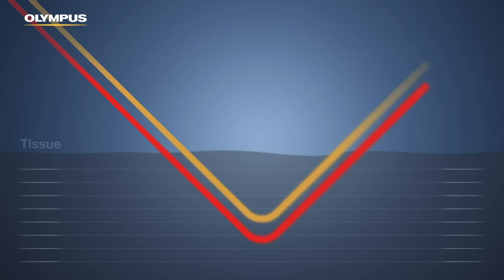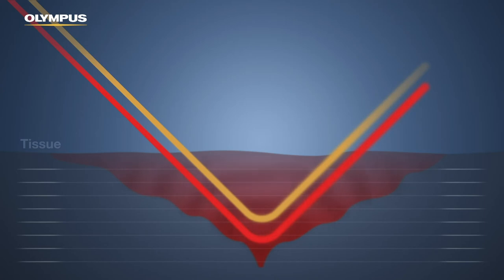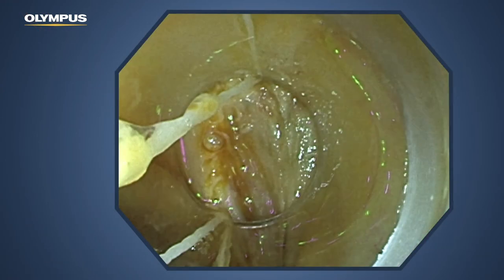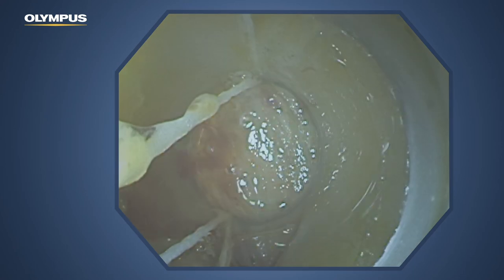If the amber light hits a bleeding point at which the blood concentration is very high, the amber light is strongly absorbed. The bleeding point appears darker and is therefore more visible.